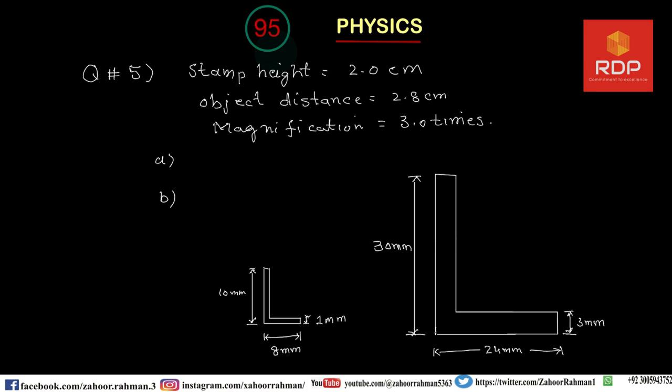Bismillah ar-Rahman ar-Rahim. Hello and welcome to Rahman Digital Production. This is lecture number 95 of Physics. In today's lecture we are going to conclude this topic with the last question which is of advanced type. Let us first understand the question. This is question number 5 on the converging lenses. The question is saying that a collector views a postage stamp of height 2 cm.